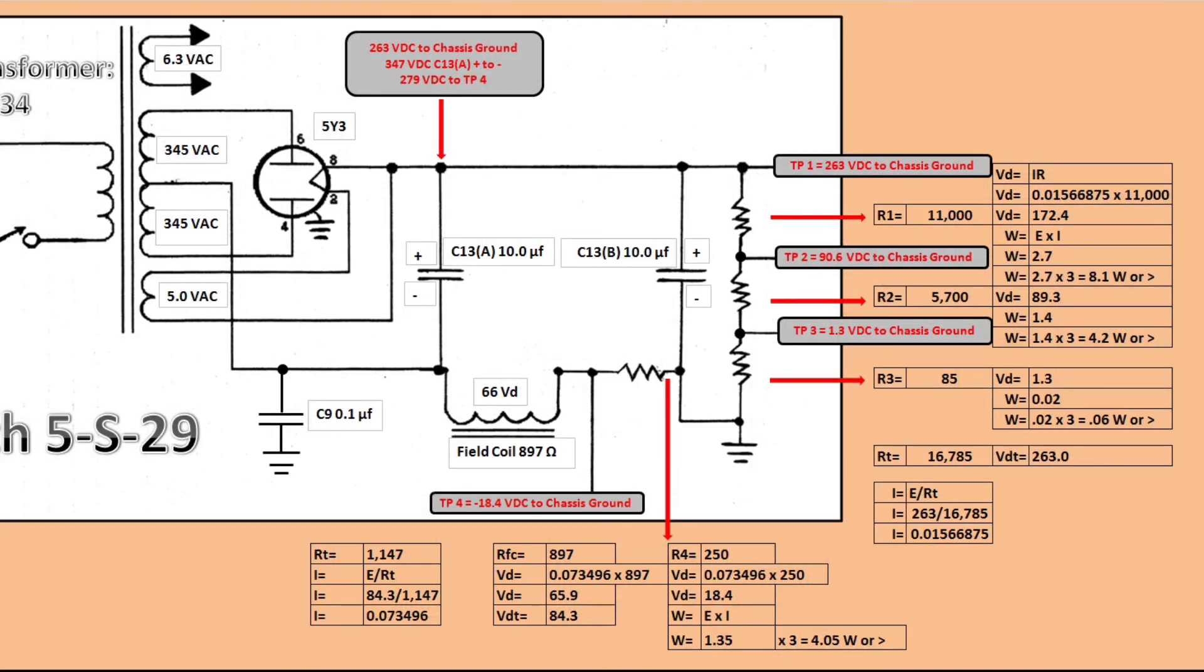That's where I'm at right now with my restoration. I do not plan on using an 11K or 5700 ohm resistor. I'll probably use a 10K, 5000, and somewhere between an 85 and 100 ohm resistor for that first section to the right. And definitely the 250 at the bottom to get the proper bias.